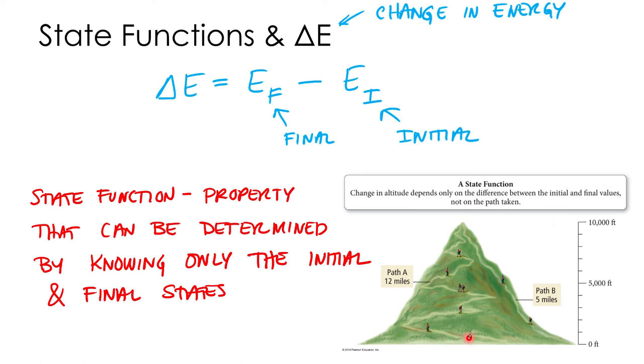Distance traveled did depend on what happened in the middle. If you chose path A it took you 12 miles. If you chose path B it only took you 5 miles. So distance would be not a state function. Alright. So that's a pretty good example. Alright. So that's the state function.